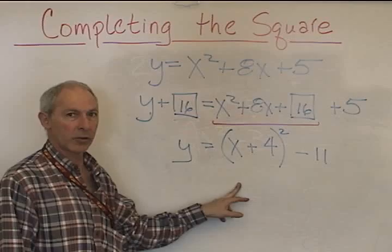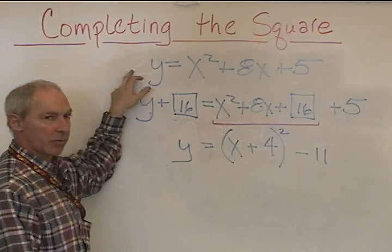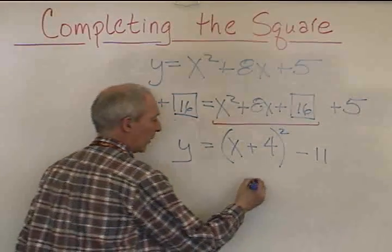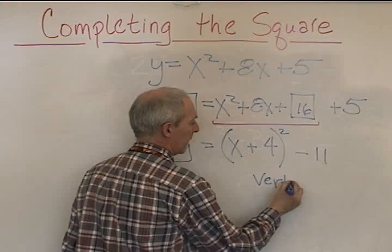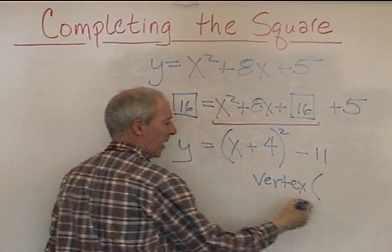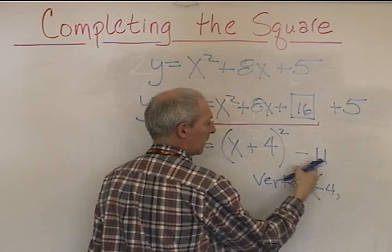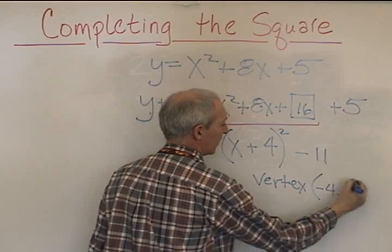We now have vertex form for this parabola, which was expressed in standard form. The vertex here is opposite sign, negative 4, and the same sign, negative 11.